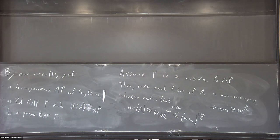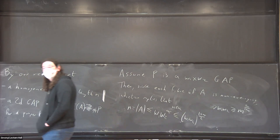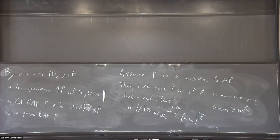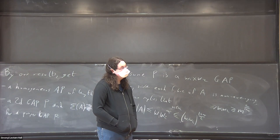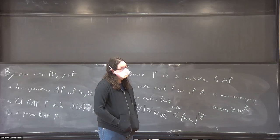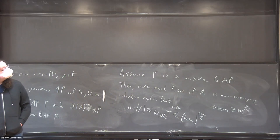Q: Do you use the fact that the integers are ordered, or could you talk about non-averaging subsets of other groups? A: The arguments as stated work quite heavily in the integers. One could definitely look at the question in other settings, but I think you'd get slightly different behavior. Let's thank David again.